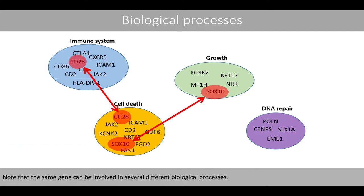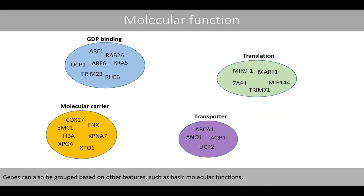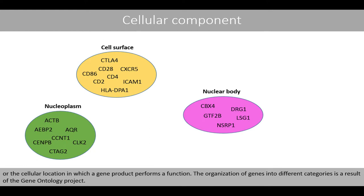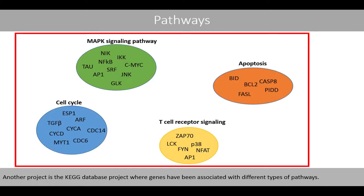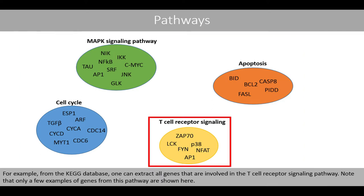Note that the same gene can be involved in several different biological processes. Genes can also be grouped based on other features such as basic molecular functions or the cellular location in which a gene product performs a function. The organization of genes into different categories is a result of the Gene Ontology project. Another project is the KEGG database project, where genes have been associated with different types of pathways. For example, from the KEGG database, we can extract all genes that are involved in the T cell receptor signaling pathway.